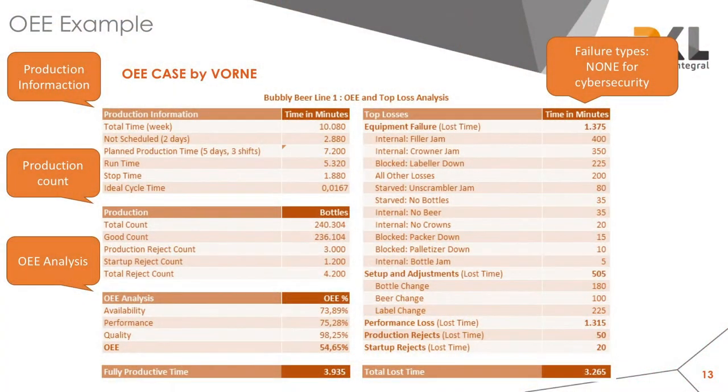Here is another example from Vorne—a good organization in the United States. This is a beer line. You can see production information, the production count in bottles for one product line, and the overall equipment effectiveness analysis. You can see the top failures: there is no beer, no bottles, no crowns. Almost all of them relate to functional issues, but none of them have to do with cybersecurity issues.